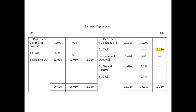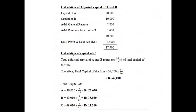Now we have to do the capital adjustment. The question states that capitals of A and B as between themselves are also to be adjusted in the profit-sharing ratio. We have to calculate the adjusted capital. In question 67 we only calculated the new partner's capital, but here we must adjust the capitals of all partners — old and new — as per the new profit-sharing ratio.